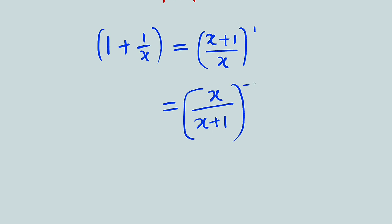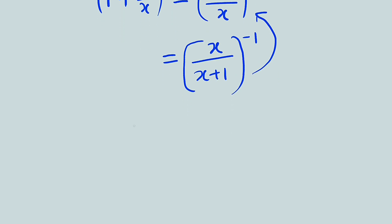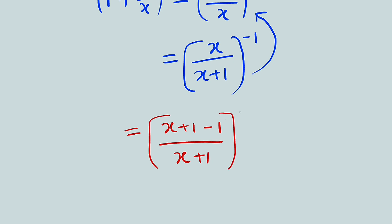But originally our bracket contains 1 as the first term. So how can we transform this so we have that 1 as the first term? We can do that by adding 1 here. If we add 1, we have (x+1)/(x+1), which is exactly equal to 1. But we have to compensate by subtracting 1, so we have plus 1 minus 1, which is 0 — it's like we are adding 0. So we can write this as (x+1−1)/(x+1), raised to the power of negative 1.